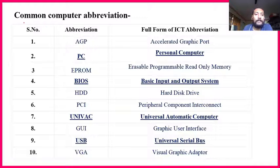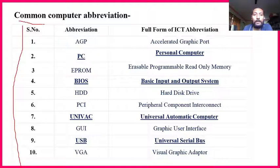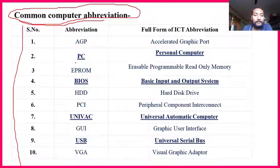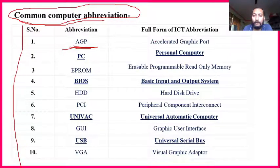This next slide contains common computer abbreviations — questions are asked most frequently from this part. Wherever I have highlighted or bolded text, that means it is very important. AGP — Accelerated Graphics Port — is not important at all; till today there has been no question from AGP. It is mainly used in graphic engineering or graphic designing courses.